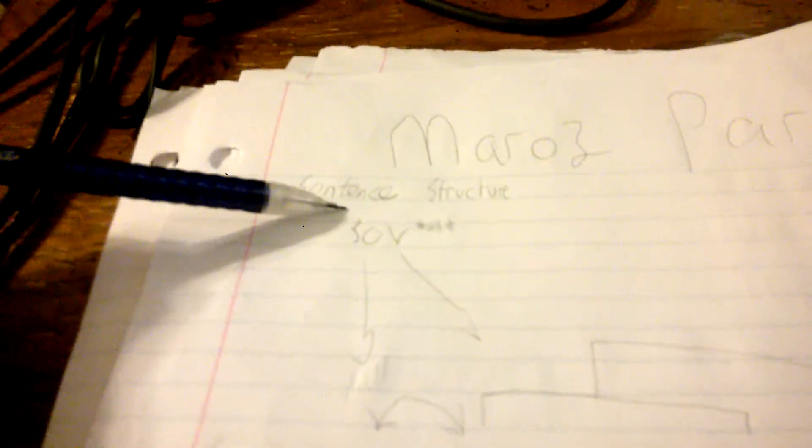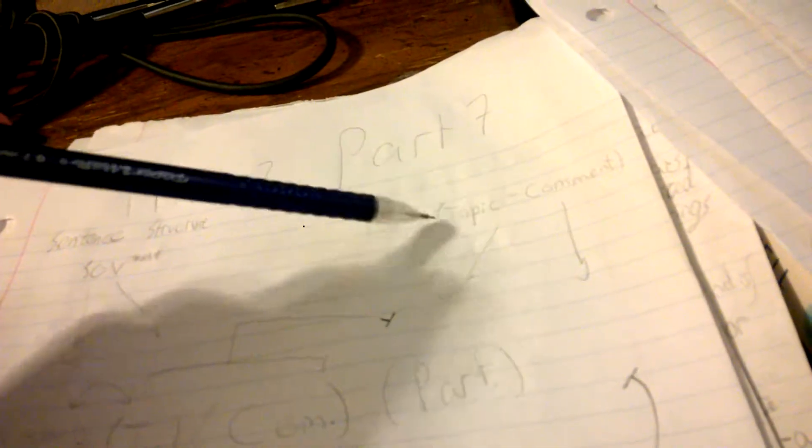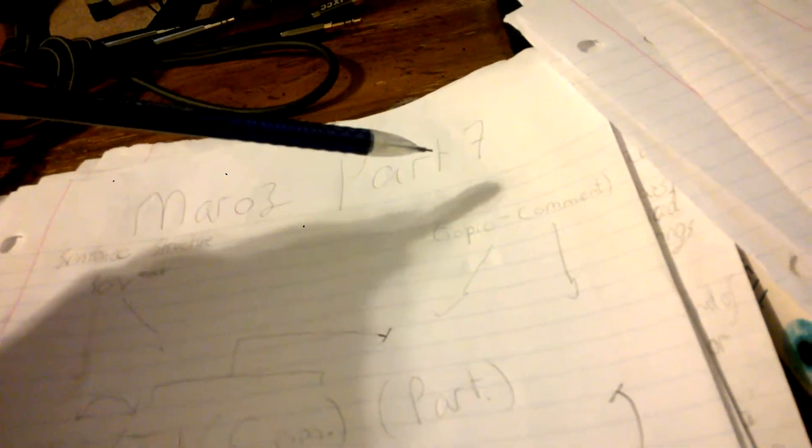Saying it is an SOV language comes with many different asterisks applied to it. In reality, it's more like a topic comment-based language, similar to Japanese in which you introduce a topic with a topic marker, and then some kind of comment on it - the object and the verb, or just a verb, or a verb in the passive form. We'll get to that later.